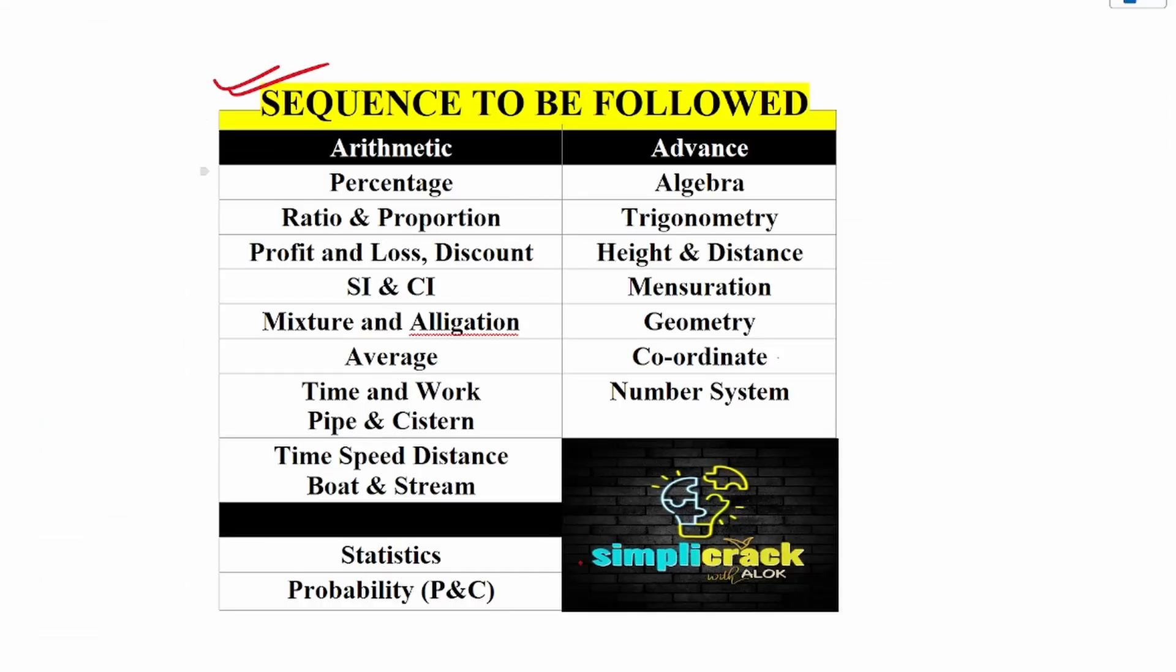Lastly, this is the sequence that you are supposed to follow when you are preparing for mathematics chapter. First, you should start with percentage in arithmetic. Then first you start with percentage, then ratio and proportion, then profit and loss. So this is the sequence that you need to follow. Statistics and probability are part of mains paper. So you can leave this for now till tier 1. For mains you will have to study this.